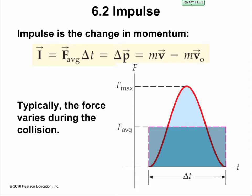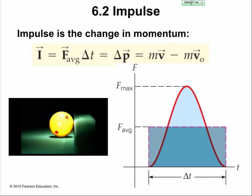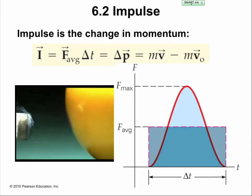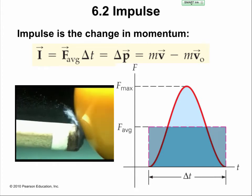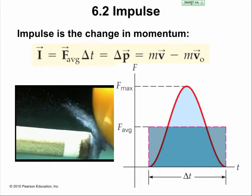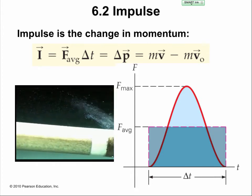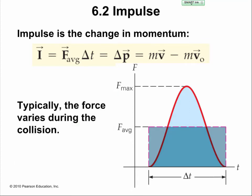Typically the force varies during the collision. Everything is dynamic, not static. As two balls collide, the balls actually transform a little bit — sometimes they stick together a little bit. So if we were to graph the force over time, you would get something similar to what's shown here.